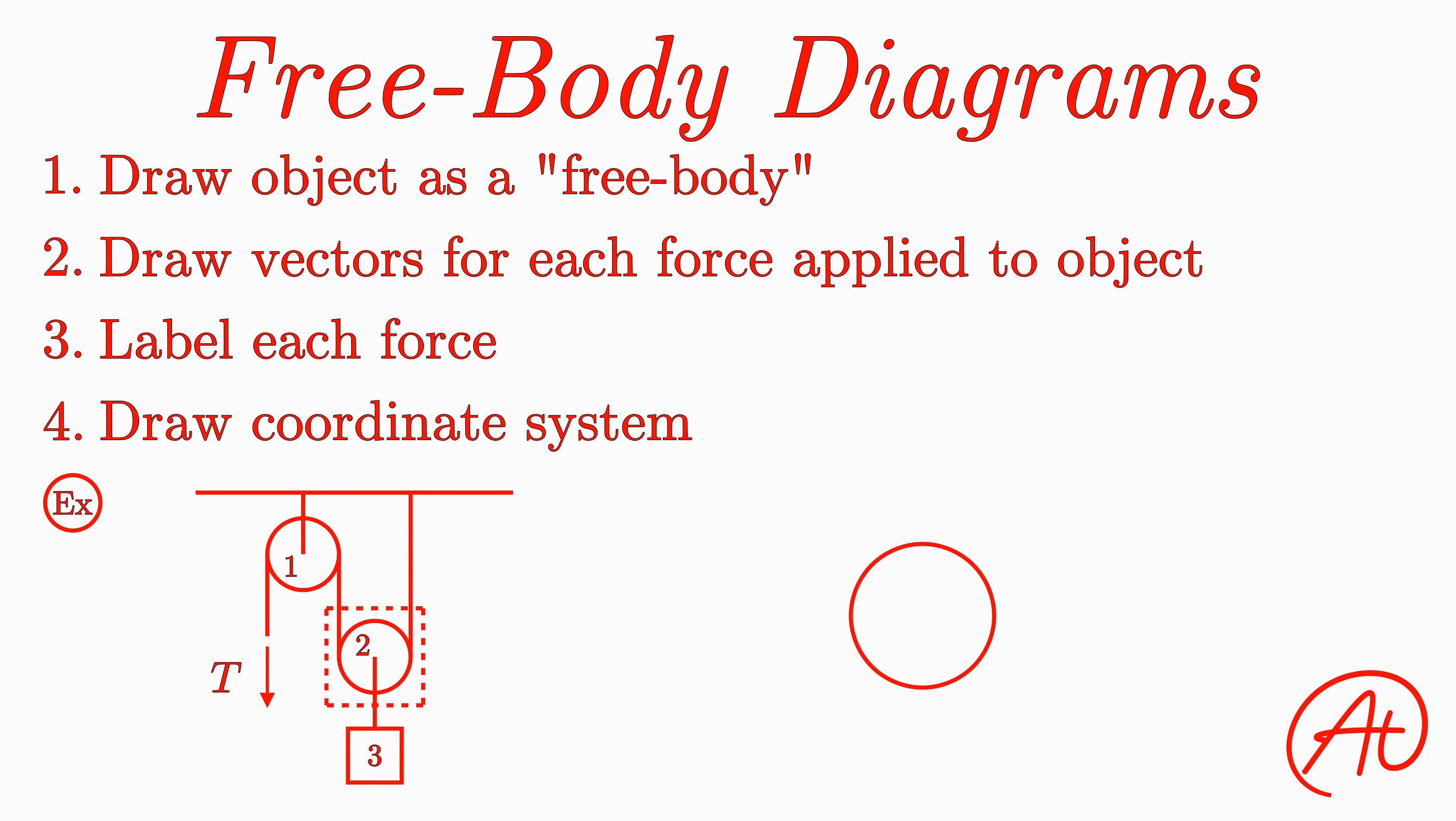Next, let's draw in our applied forces. First let's replace the weight of block number three with an arrow pointing downward. Then we have the cable on the left and the right of the wheel that we can replace with two vectors acting upward.